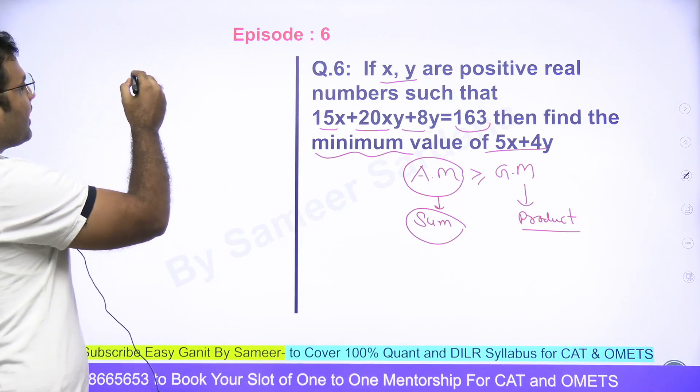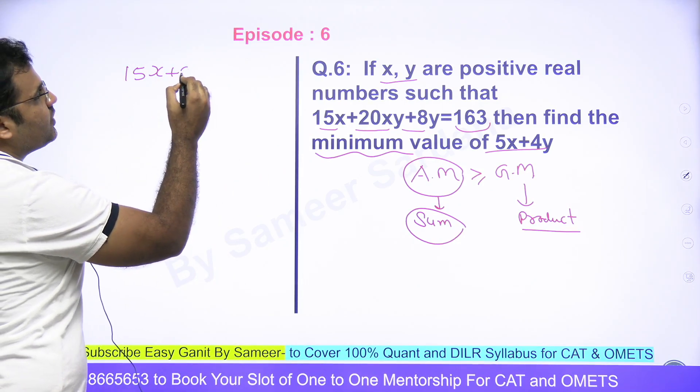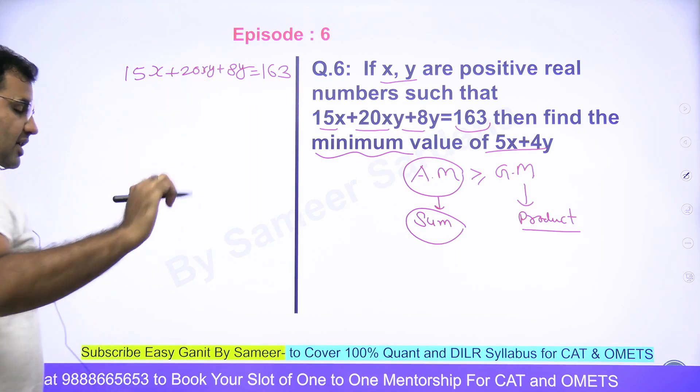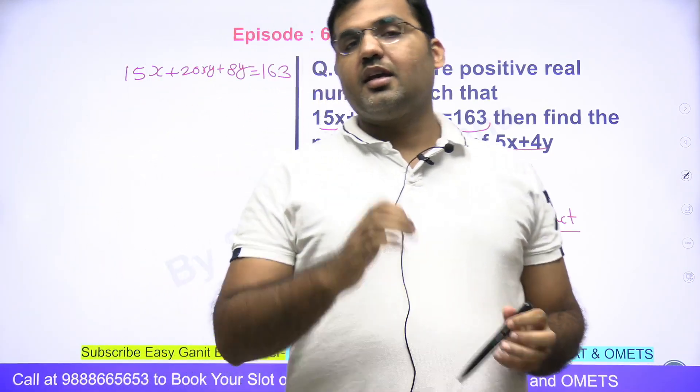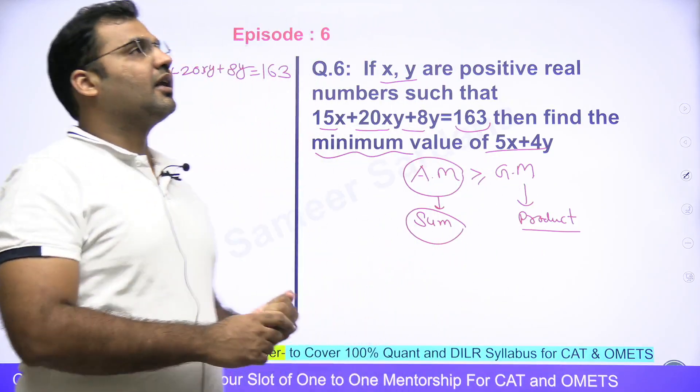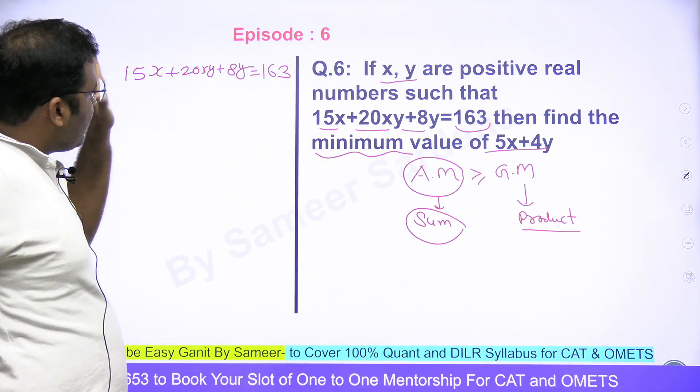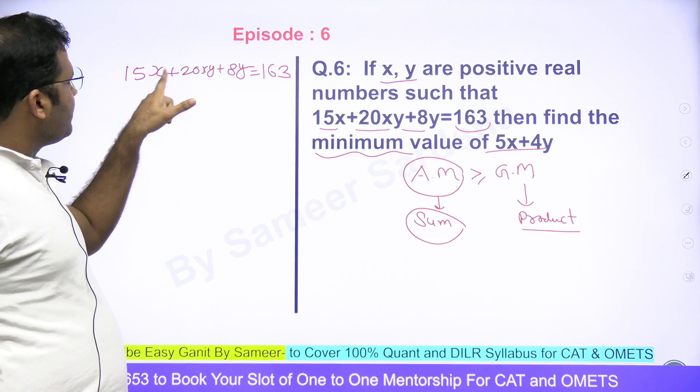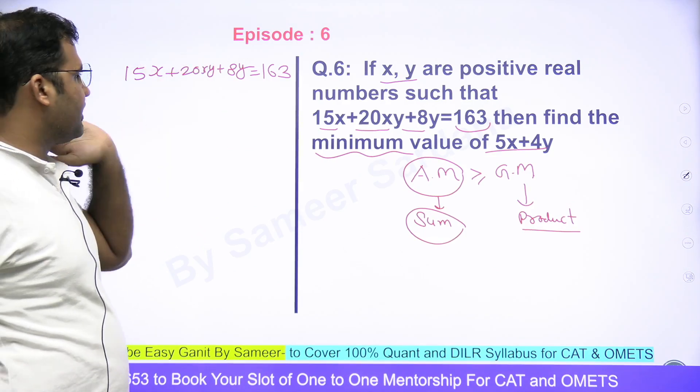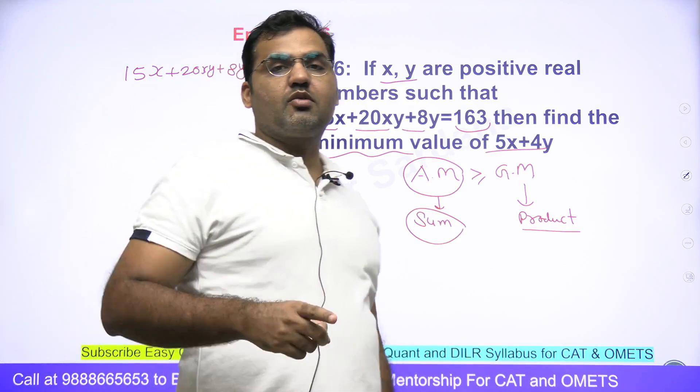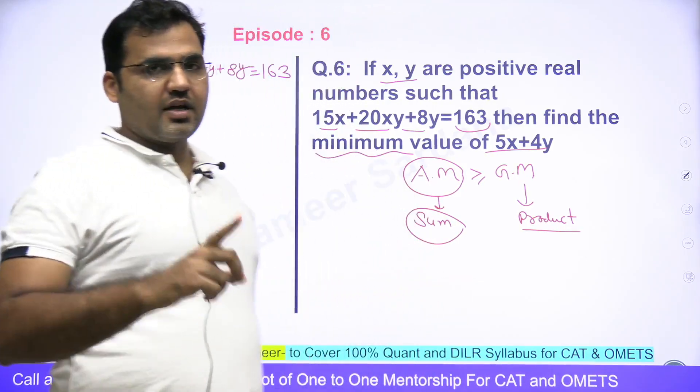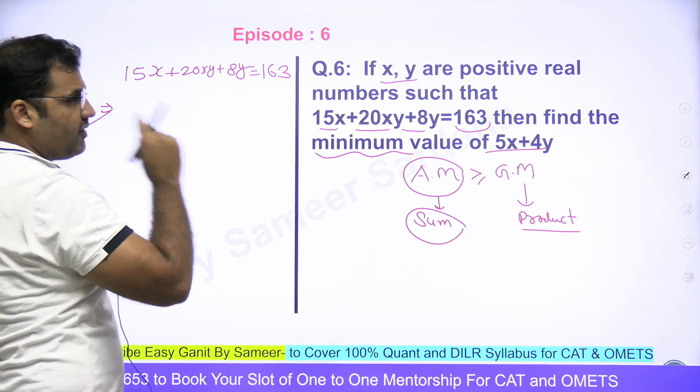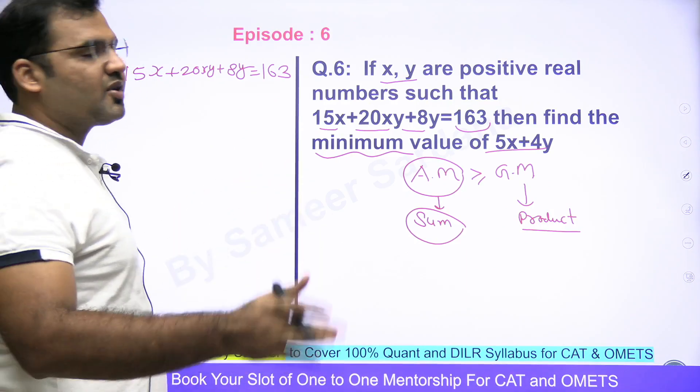Now look at this equation. The equation that we have is 15x+20xy+8y=163. This equation is a very favorite equation of CAT's. Jab bhi aapko aisi equation mili jis me do variables hain, jis me do terms me do variables hain, or ek term in dono variables ka product ke form me represent kiya hua hai, then you always convert this equation into the product form.